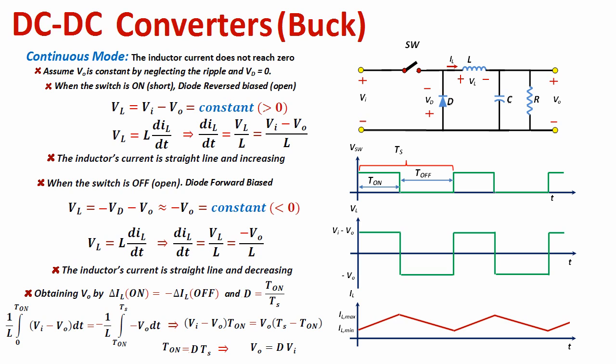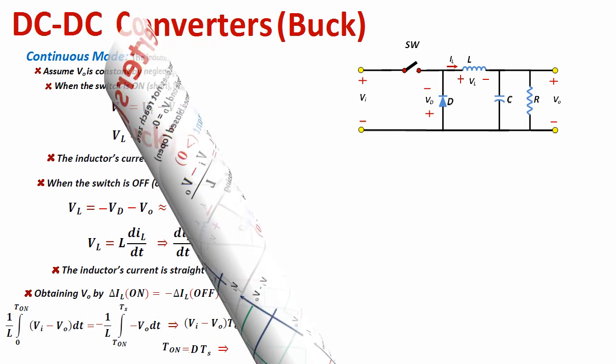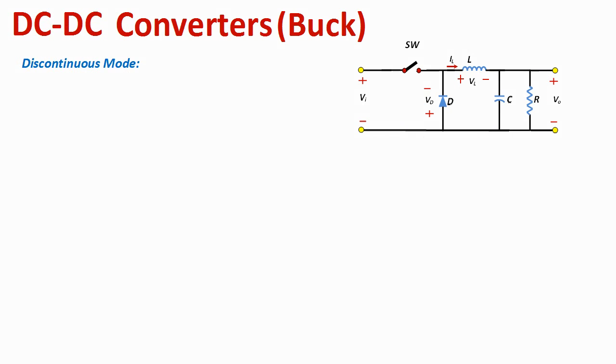The next mode for the buck converter is the discontinuous mode, where the inductor current reaches zero. This happens at very light load. The inductor current starts very low, and as the circuit supplies the load with current, the inductor current eventually reaches zero. We are going to figure out the shape of the current waveform, starting with the clocking pulses of the gate that turn the switch on and off.